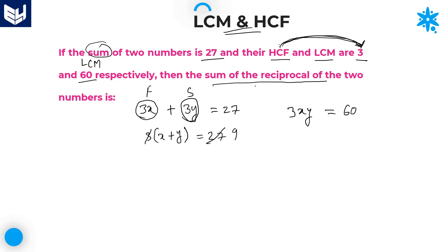The question is asking for the sum of the reciprocals. The reciprocal of the first number 3x is 1/3x, and the reciprocal of the second number 3y is 1/3y. The question is asking for the sum of these two reciprocals.